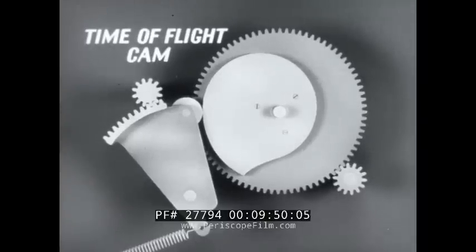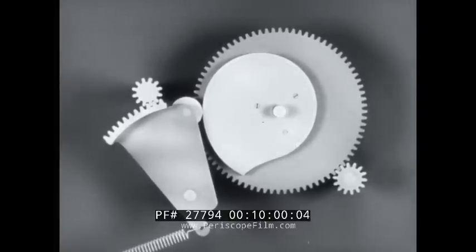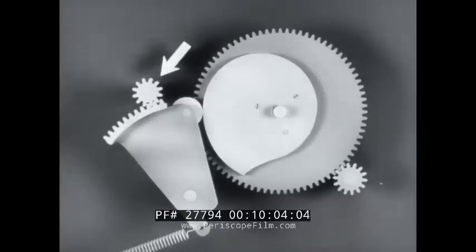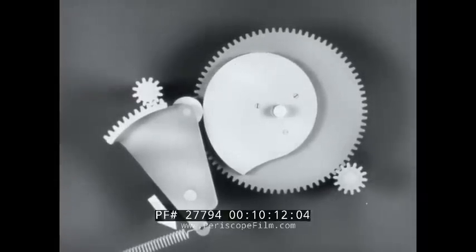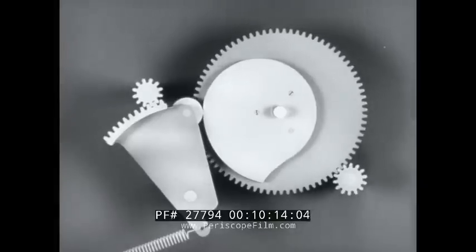This time of flight cam is an example of a flat ballistic cam. The working surface is the outside contour of this part. The input is range. The output, time of flight. This is a sector type follower, held in contact with the cam by a spring. You can see how the cam turns the output gear.